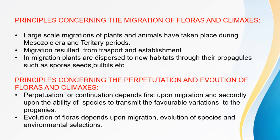Plants are dispersed to new habitats through their propagules such as spores, seeds, and bulbules. Some spores migrate through air. This principle covers flora migration and climaxes.